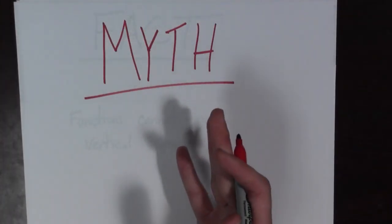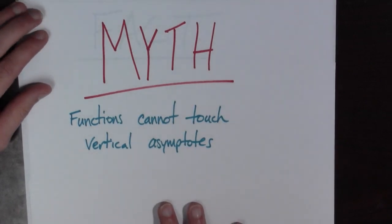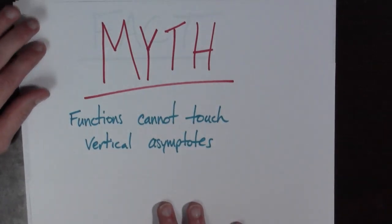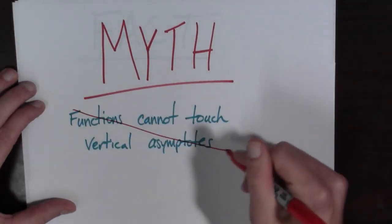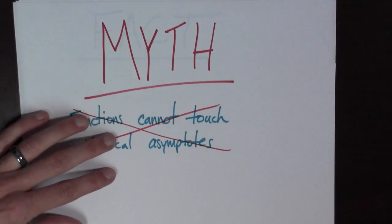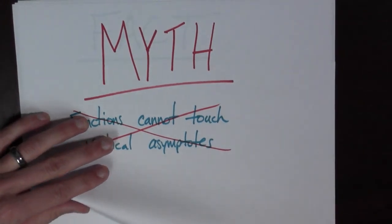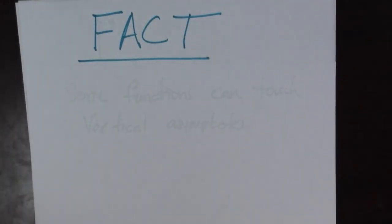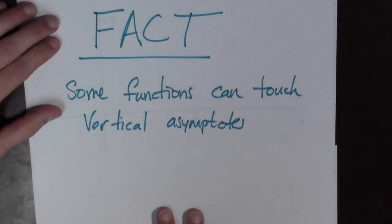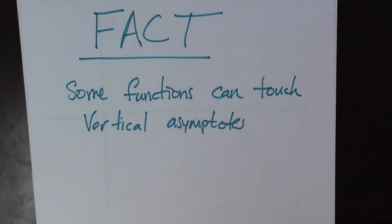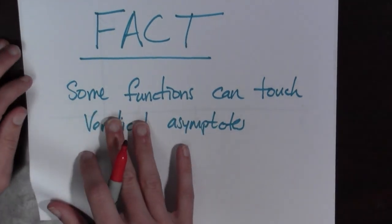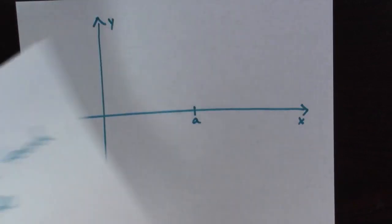Myth! Functions cannot touch vertical asymptotes. This is not true. The fact is that some functions can touch vertical asymptotes. You may be wondering how this happens — let me show you a picture.